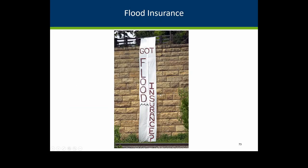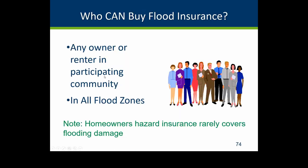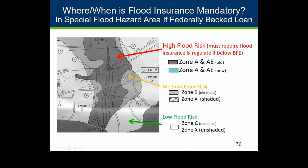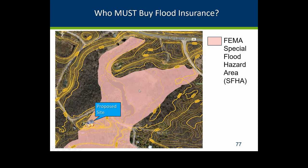Briefly on flood insurance: it's available to anyone in a participating National Flood Insurance Program community regardless of what zone you're in. A common misconception is that agents tell people they can't get flood insurance because they're not in the FEMA-mapped zone — wrong, you can get a policy anywhere in the community. Flood insurance is mandatory if you're in the mapped high-risk Zone A area and have a federally backed loan. There is an option to get a Letter of Map Amendment to prove you're high enough and remove the mandatory requirement.